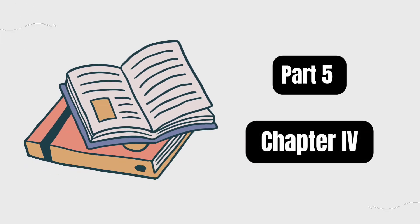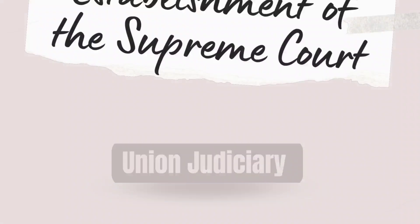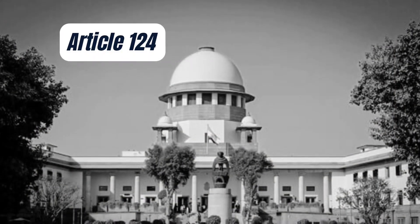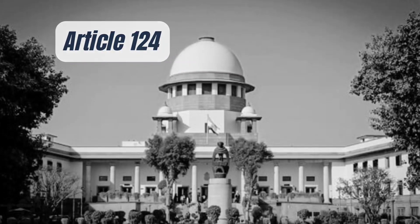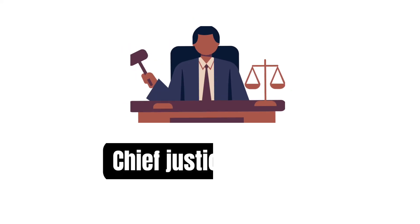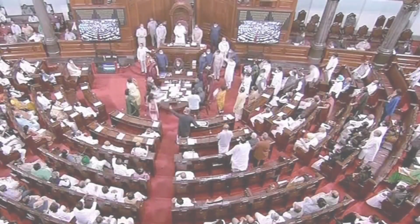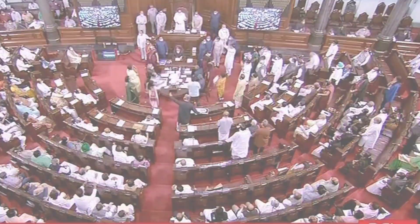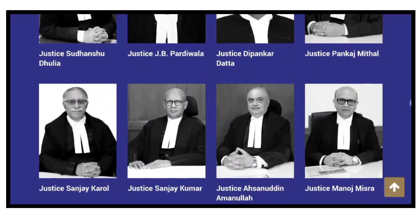Part 5, Chapter 4 of the Indian Constitution deals with the Union Judiciary. The Establishment of the Supreme Court: Article 124 of the Constitution mentions that India shall have a Supreme Court consisting of the Chief Justice of India and other judges. The Parliament has the power to increase the number of judges in the Supreme Court. The present strength stands at 34, including the Chief Justice.